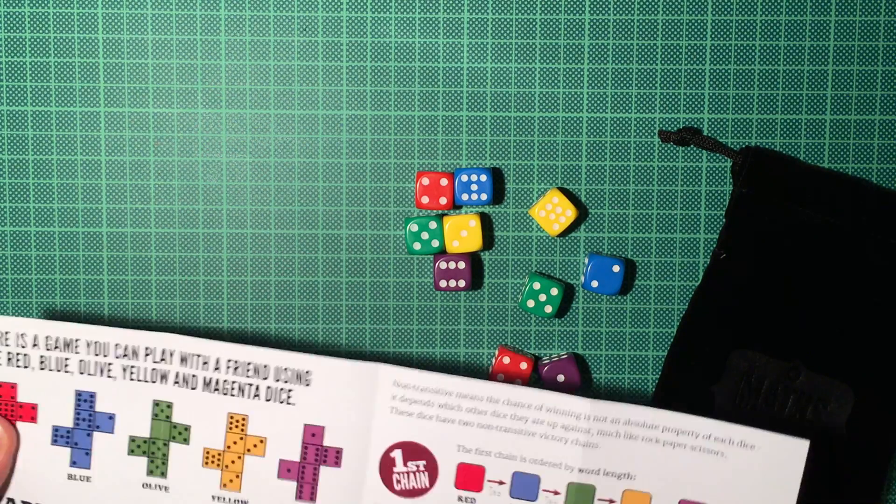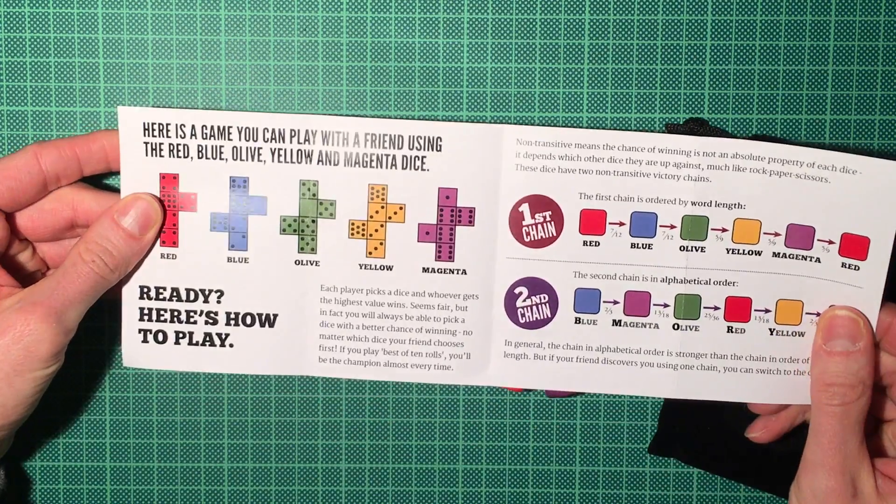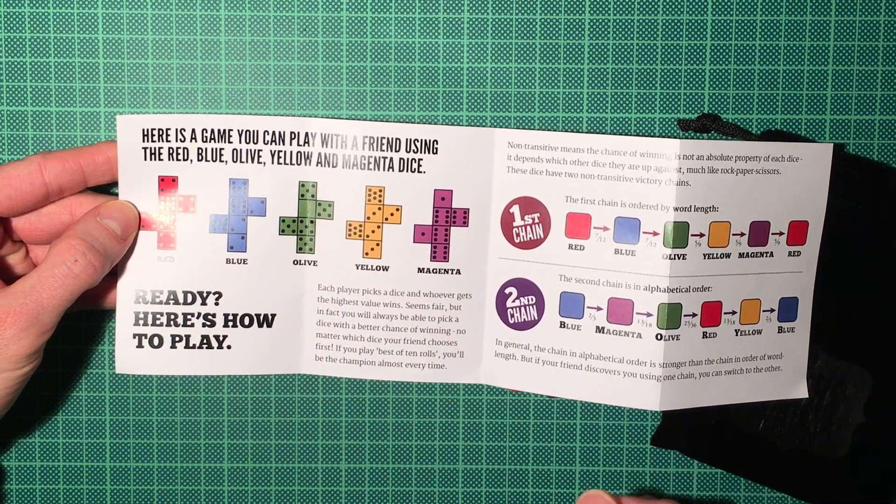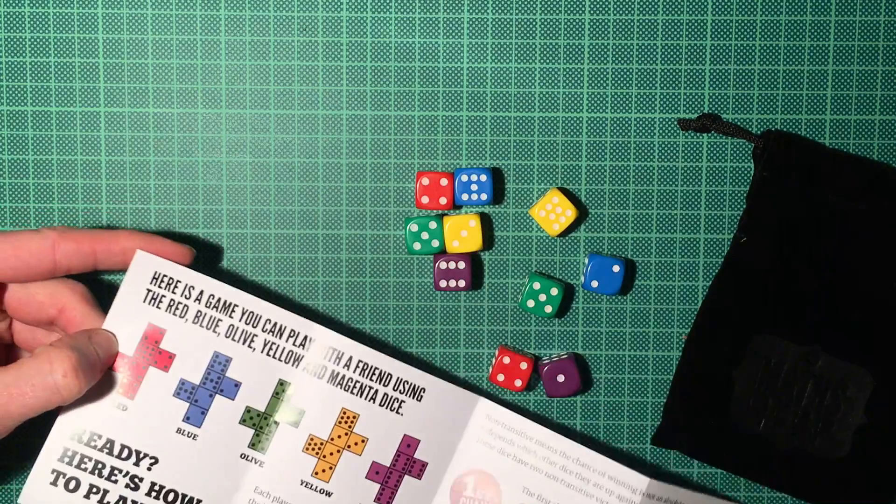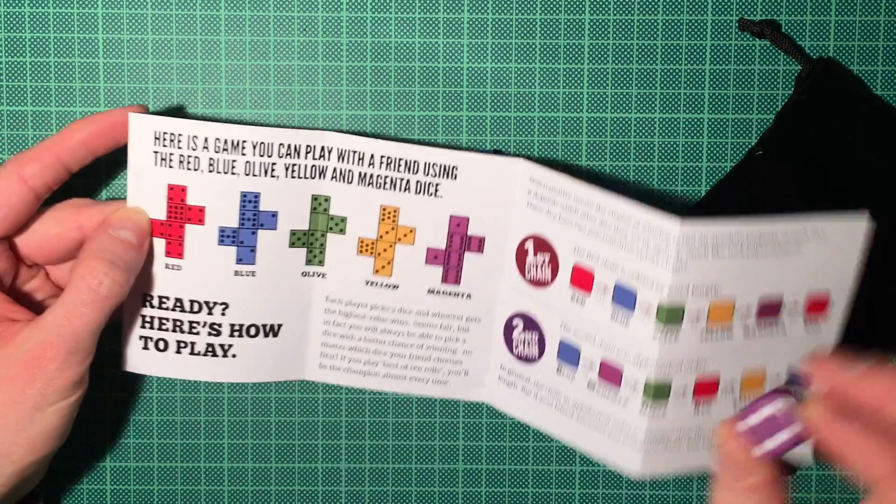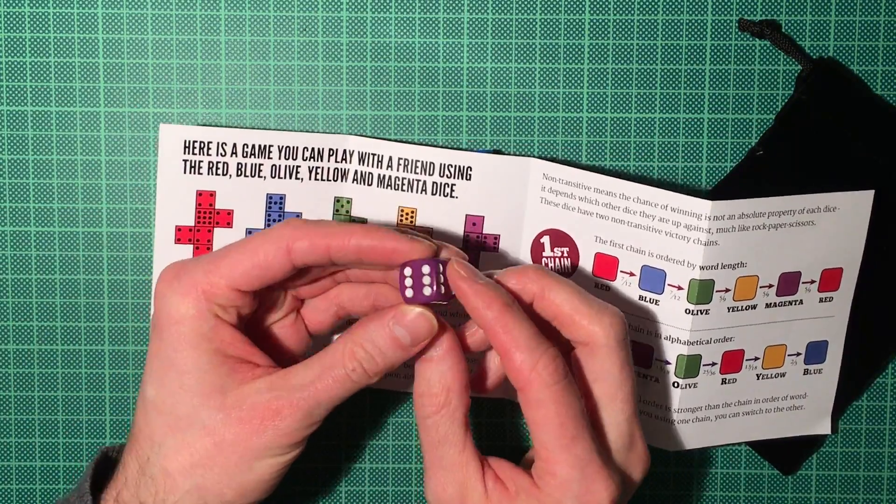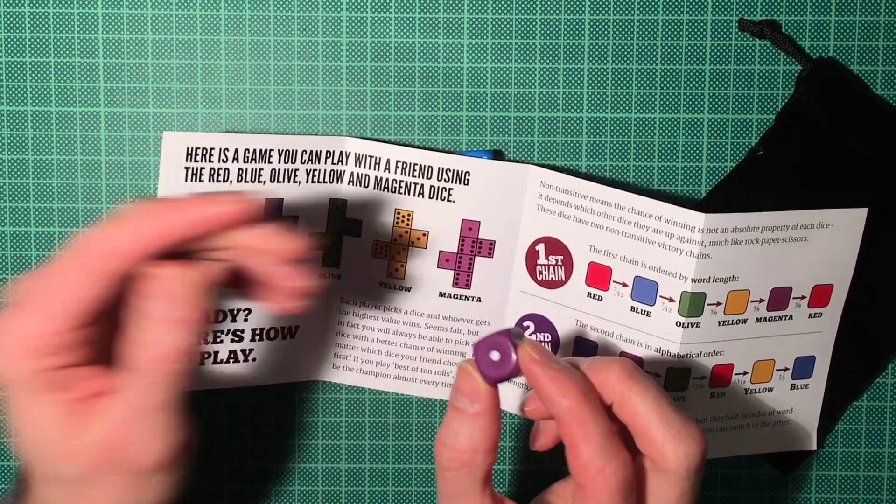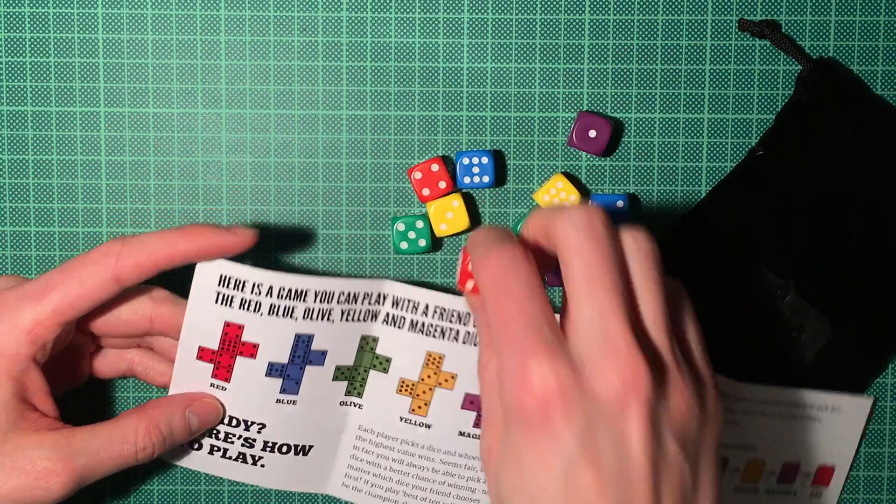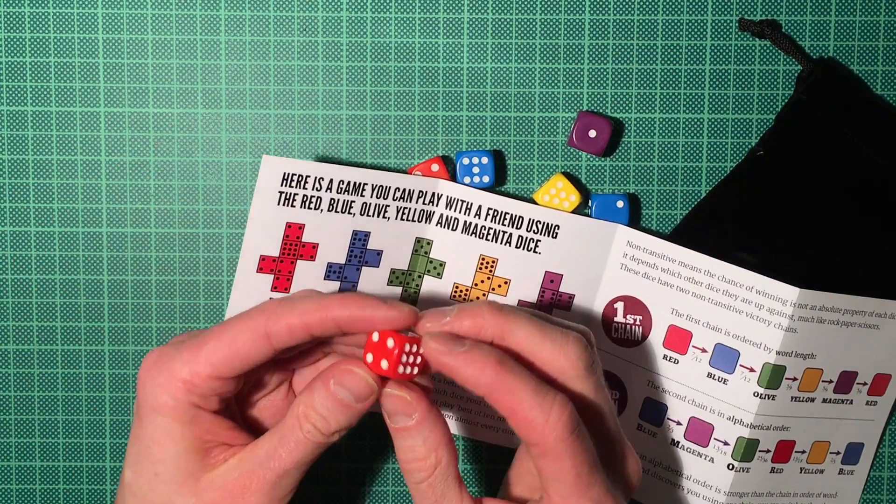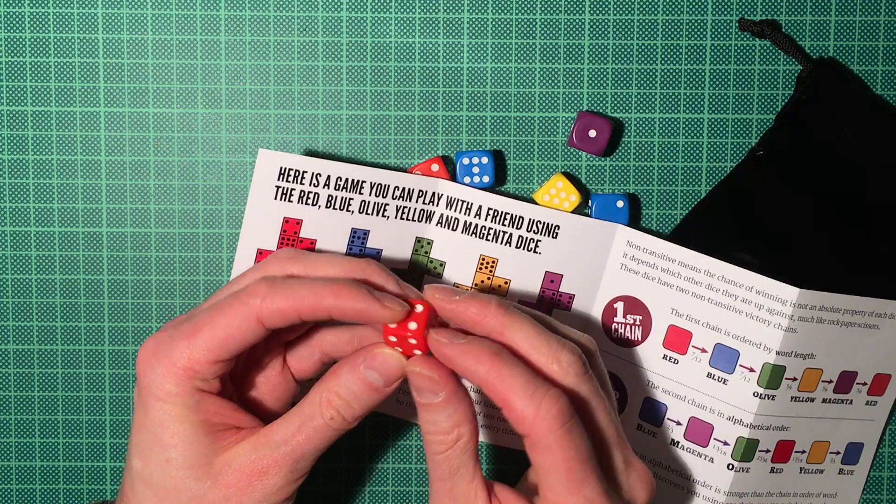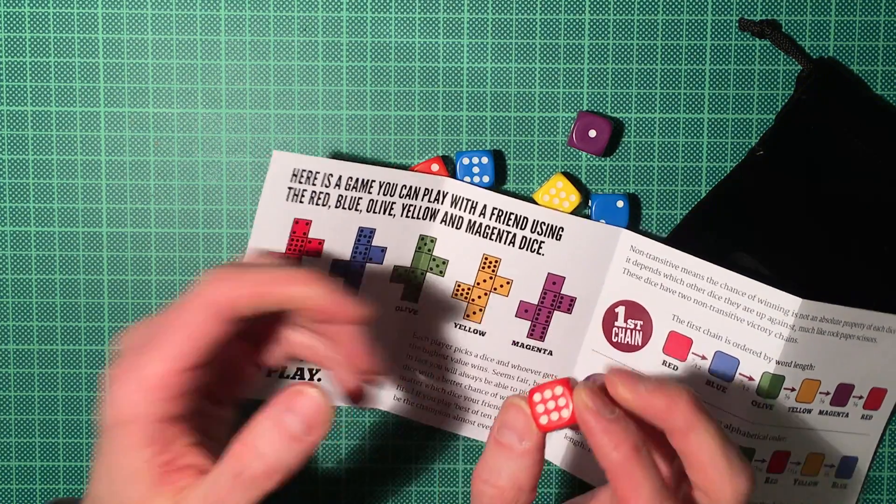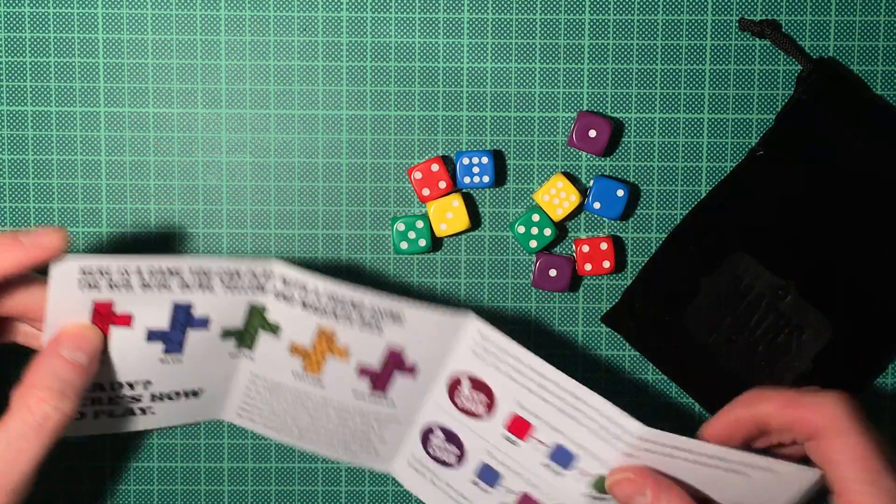So they made a nice little sheet for the instructions. Here you see all the dice and what numbers are on them. They are not your usual dice. For example, the Magenta, or I would call it purple die, has four sixes and two ones. And the red die has a nine, which usually doesn't appear on a six-sided die, and the rest are fours. So they are absolutely not your standard dice.